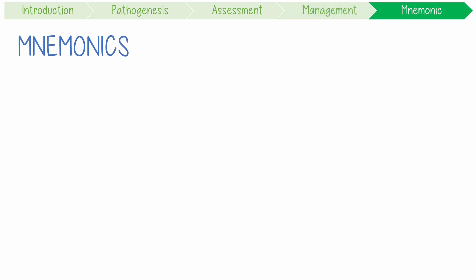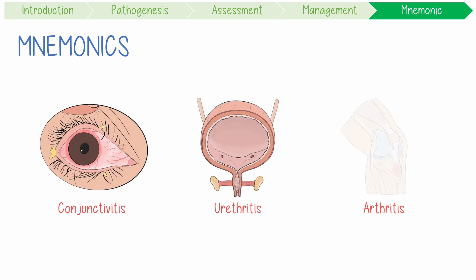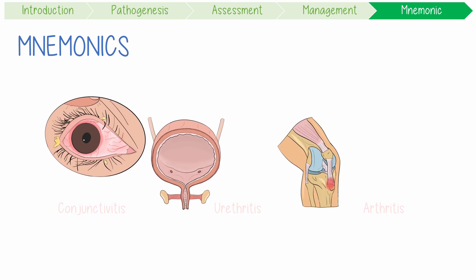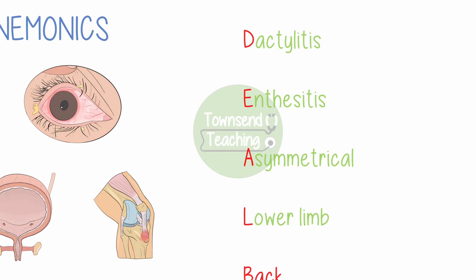Let's summarize with a mnemonic. The classic triad of symptoms — conjunctivitis, urethritis, and arthritis — can be remembered with the rhyme: can't see, can't pee, can't climb a tree. And the arthritis features can be remembered with the phrase DEAL-BACK. Thanks for watching Townsend Teaching.